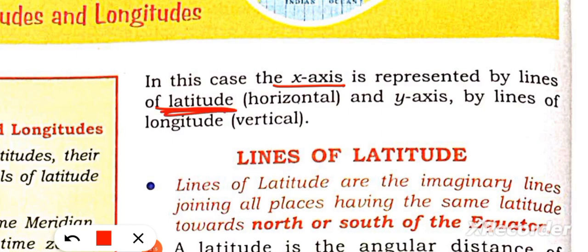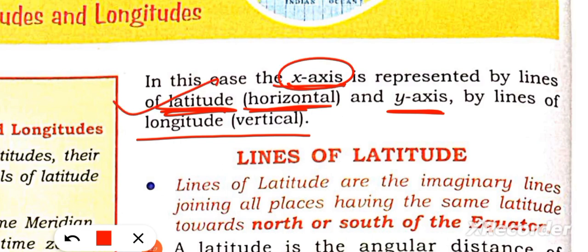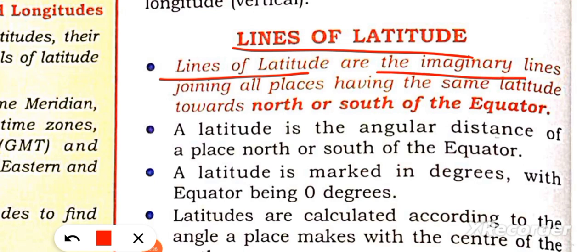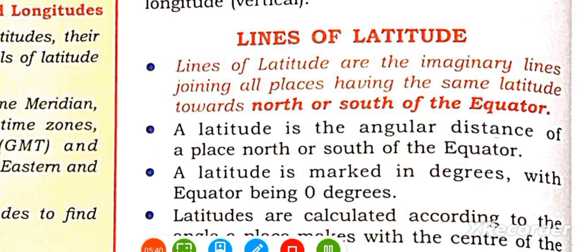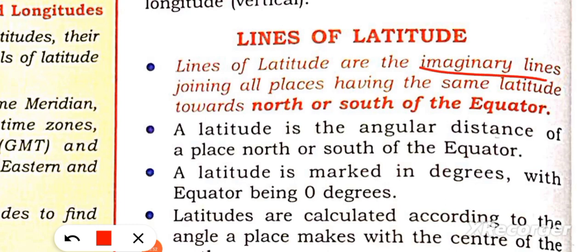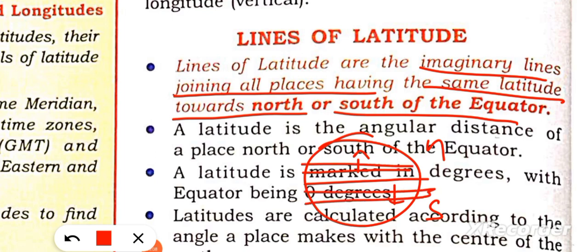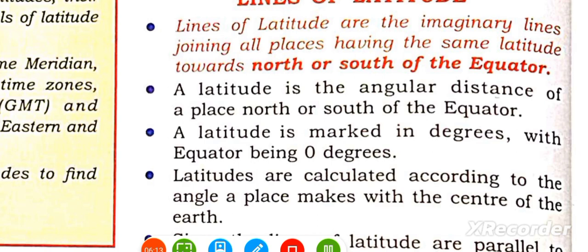So the x-axis represents latitude and the y-axis represents longitude. Lines of latitude are imaginary lines. These lines of latitude join all the places which have the same latitude, towards the north and south of the equator.